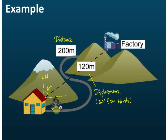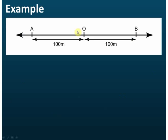So that is the difference between distance and displacement. Distance is the total length of the path, while displacement is the length of the shortest distance between two points — which is always the straight line connecting those two points. For displacement, you must state both the magnitude and the direction. Let's look at another example with three points: A, O, and B.